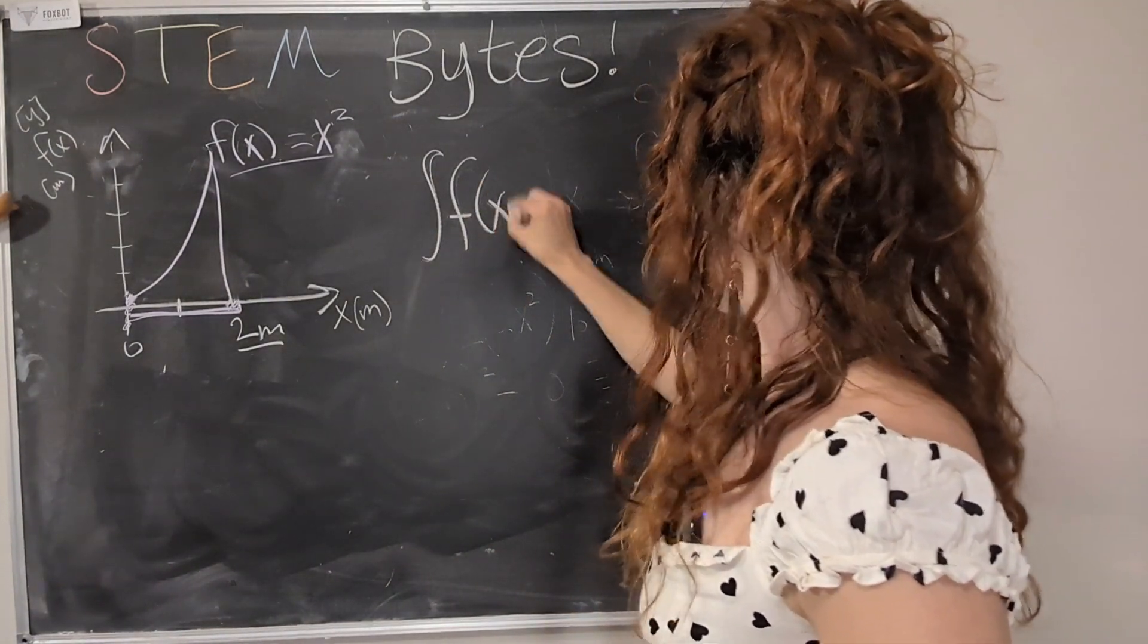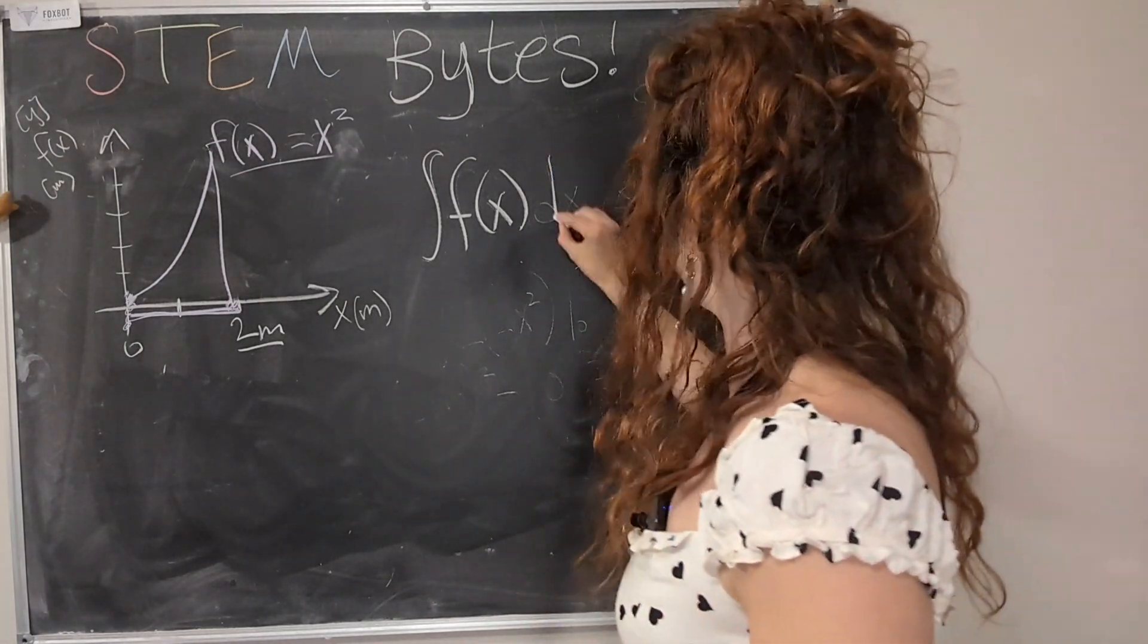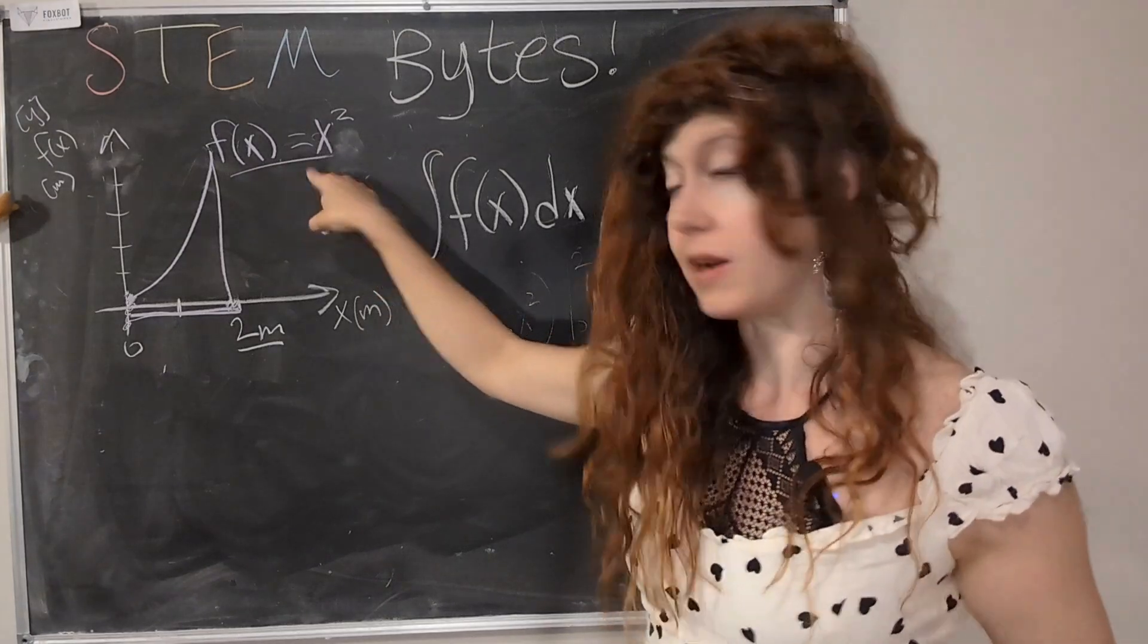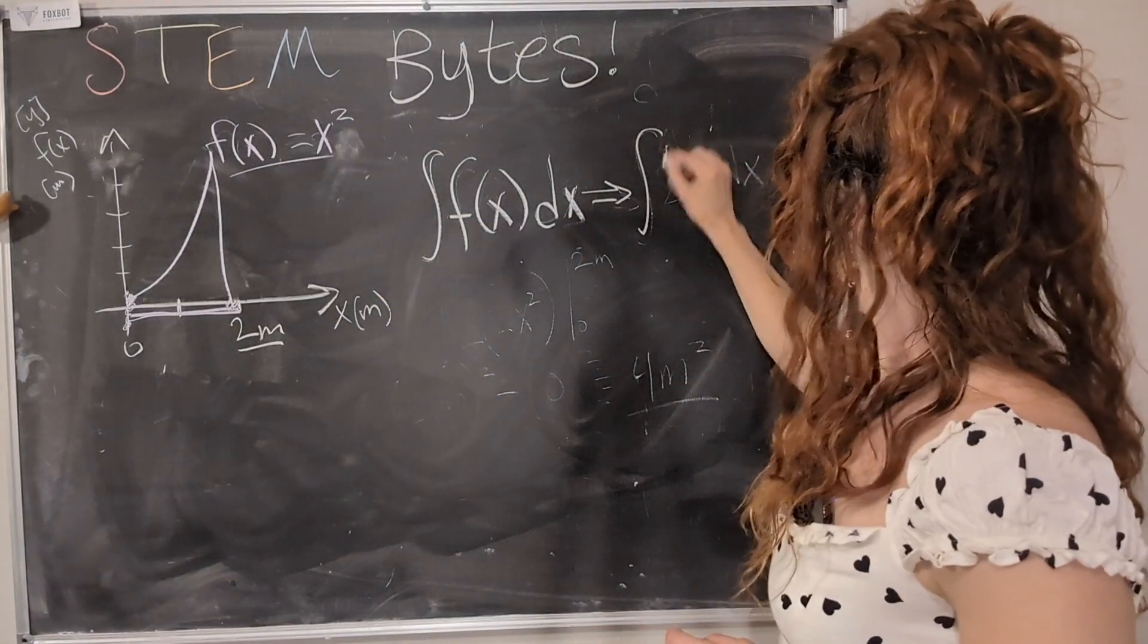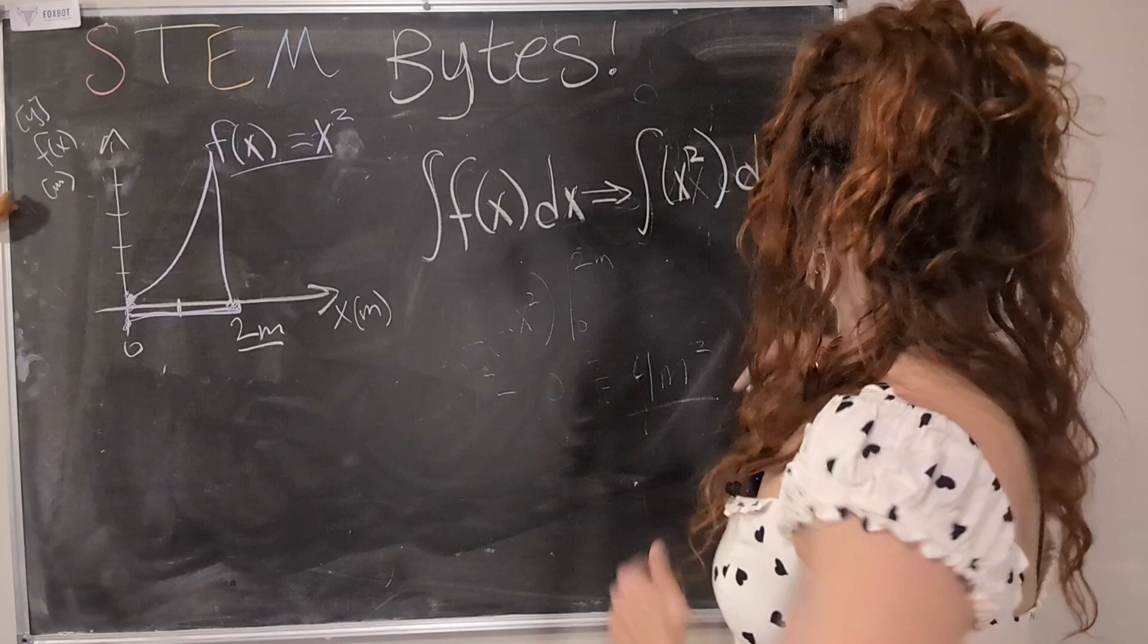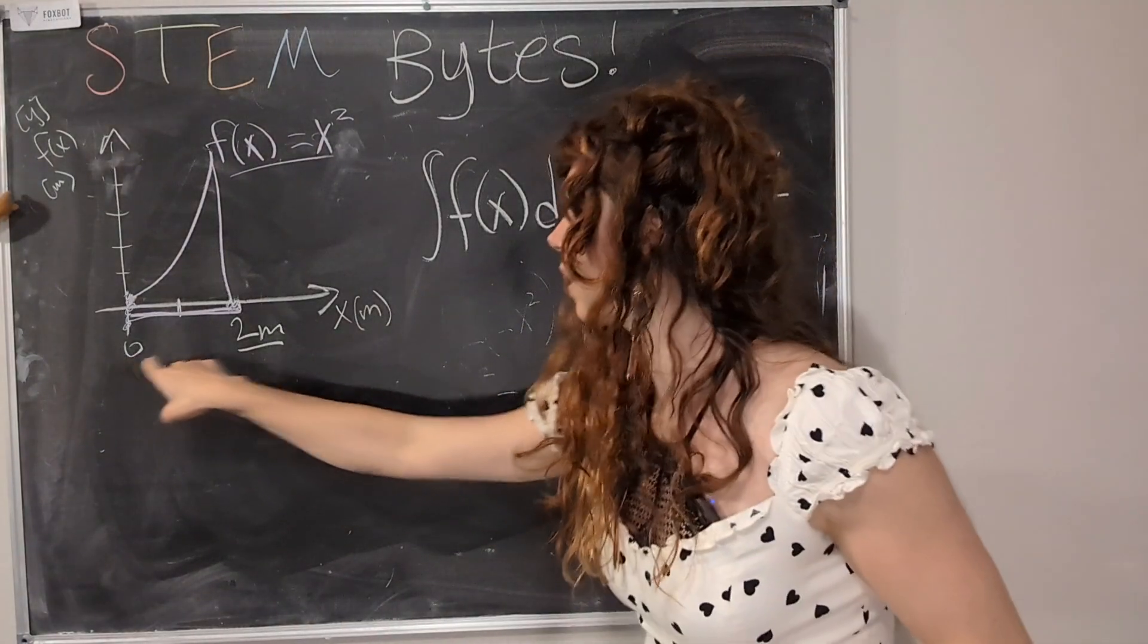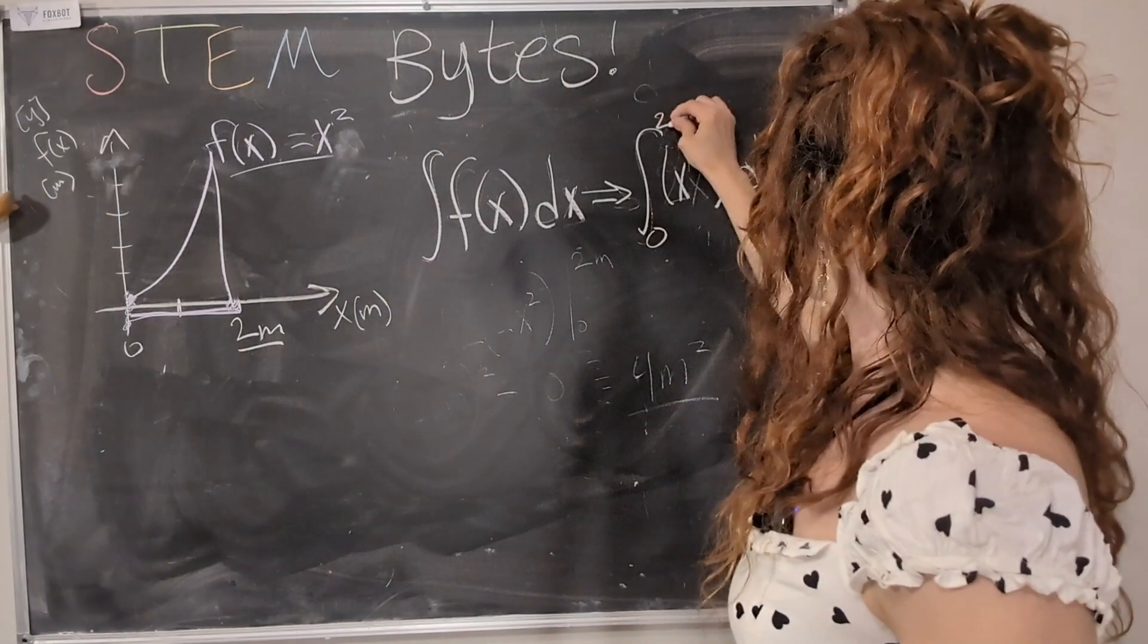We're going to use our handy dandy white chalk. So again, we're going to take the integral of f of x. And so we plug in what f of x equals. So then this is x squared. We are taking the integral of x squared with respect to x. That is our variable that we are taking the integral of. And then same thing. We plug in the distance of the integrand. So from zero to two meters.